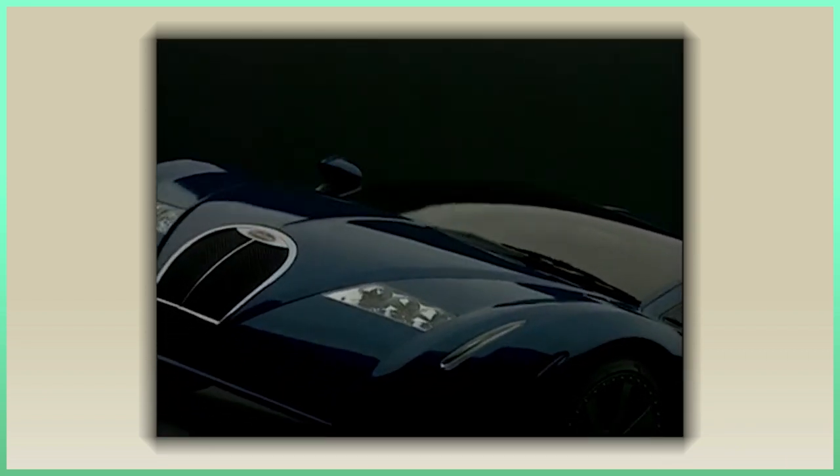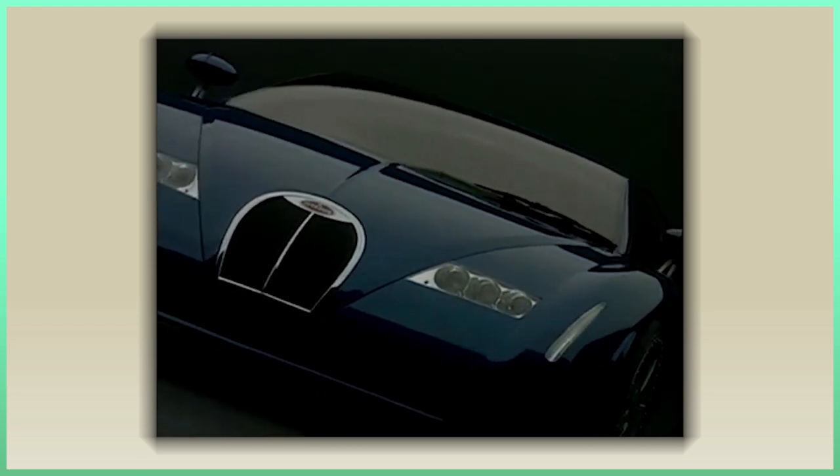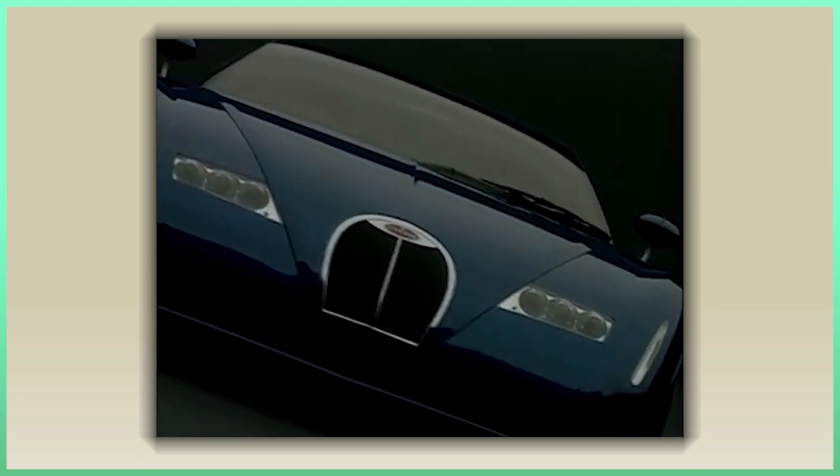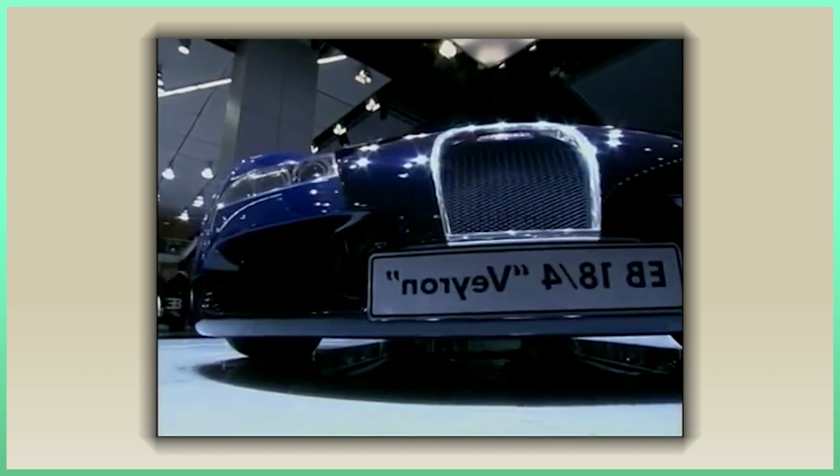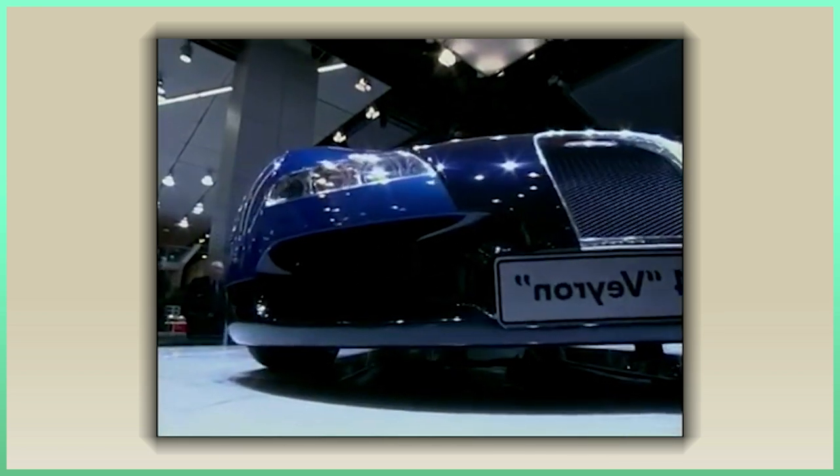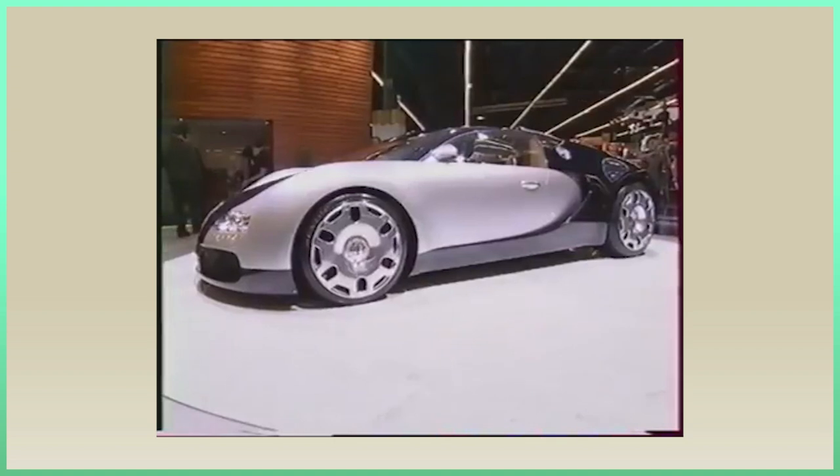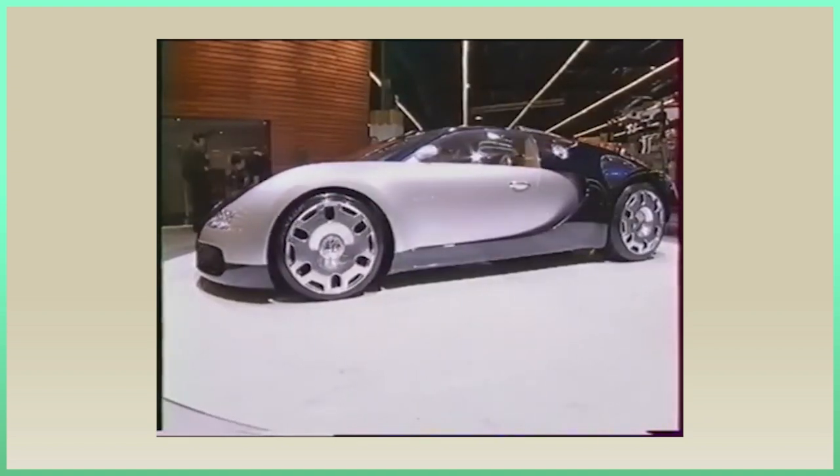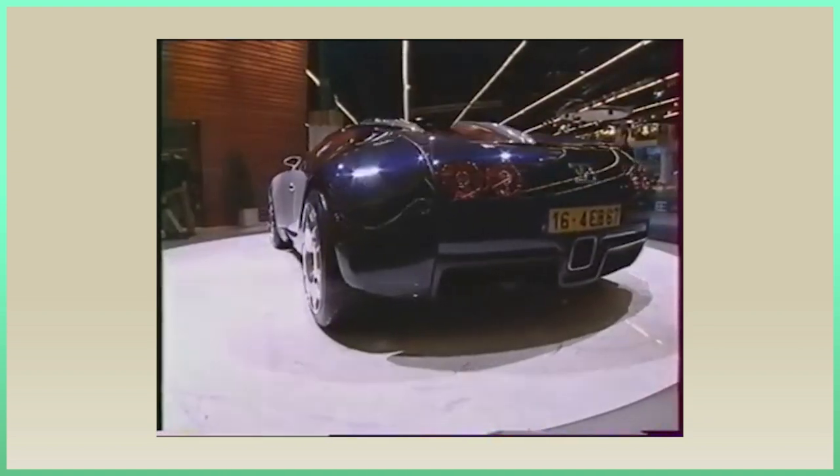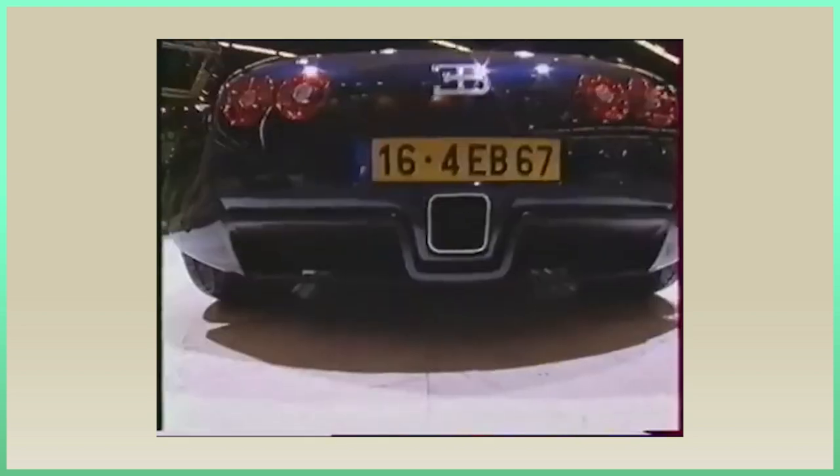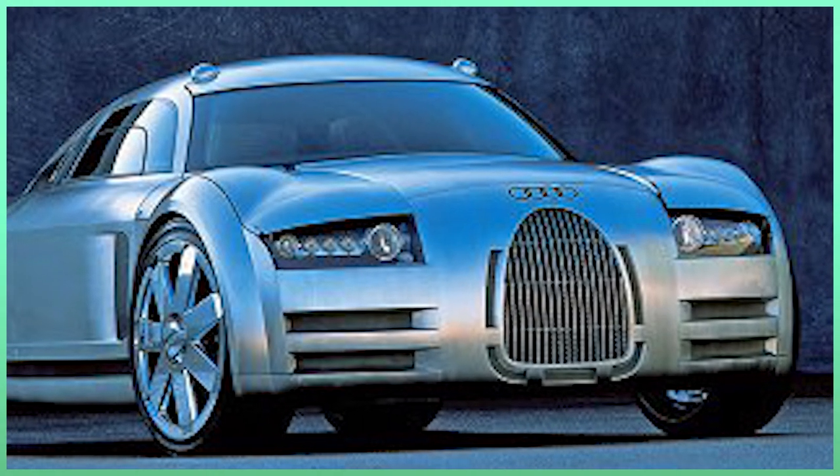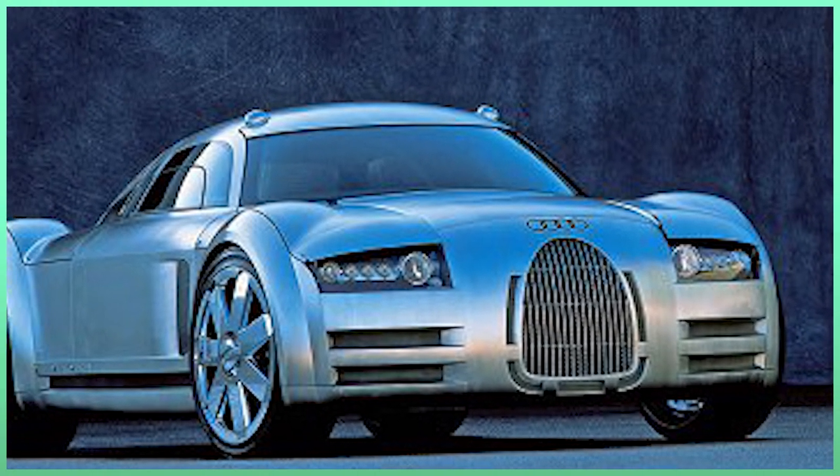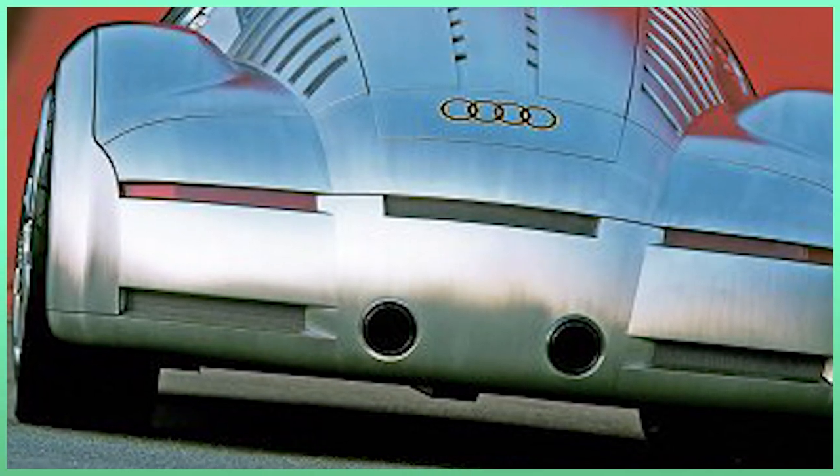And this was shown at that year's Paris Motor Show with the 18-3 Chiron and later with the EB 18-4 Veyron, presented at the Tokyo Motor Show. But one year later Bugatti presented the EB 16-4 Veyron, which ditched the W18 for the 8-liter W16. Also in 2000 came the Rosemeyer, which at least from the looks was the most hardcore one from the W16 concepts.